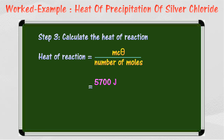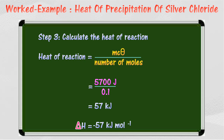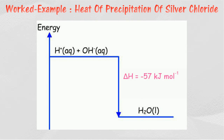0.1 mole of hydrogen ion reacts with 0.1 mole of hydroxide ion to produce 5,700 joules of heat. Therefore, one mole of hydrogen ion reacts with one mole of hydroxide ion to produce 57 kilojoules of heat. Since this is an exothermic reaction, the heat of neutralization between hydrochloric acid and sodium hydroxide solution is negative 57 kilojoules per mole.